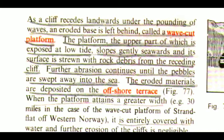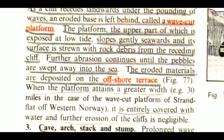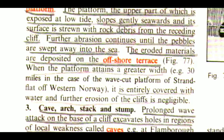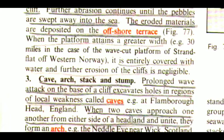The platform, the upper part of which is exposed at low tide, slopes gently seawards and its surface is strewn with rock debris from the receding cliff. Further abrasion continues until the pebbles are swept away into the sea. The eroded materials are deposited on the offshore terrace. When the platform attains a greater width — miles in the case of the wave-cut platform of Strandflat of Western Norway — it is entirely covered with water and further erosion of the cliffs is negligible.